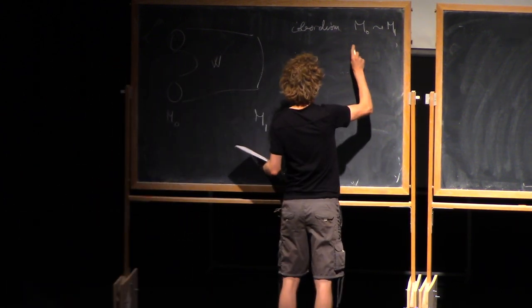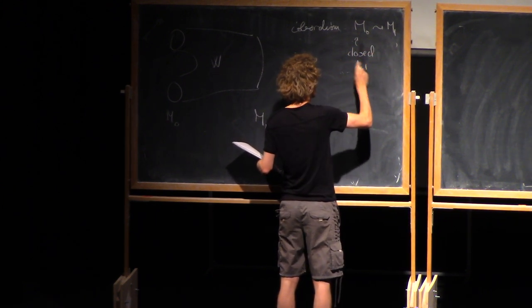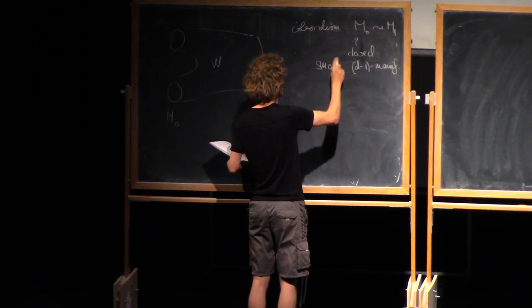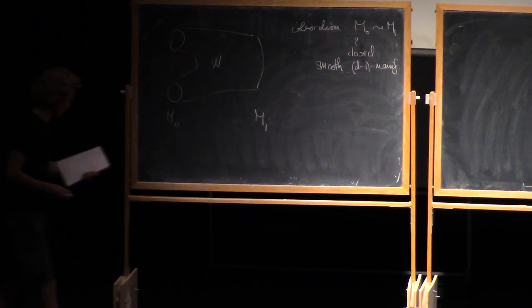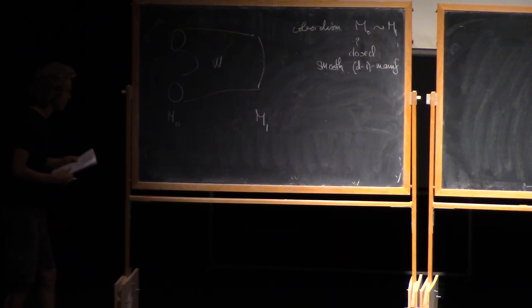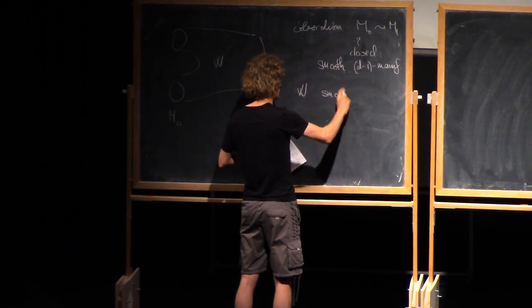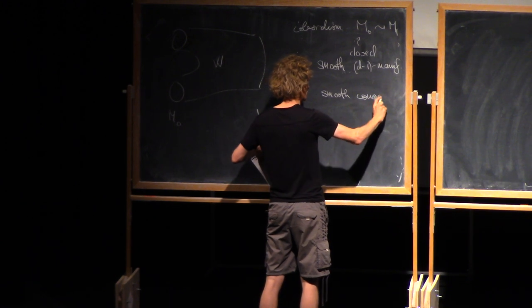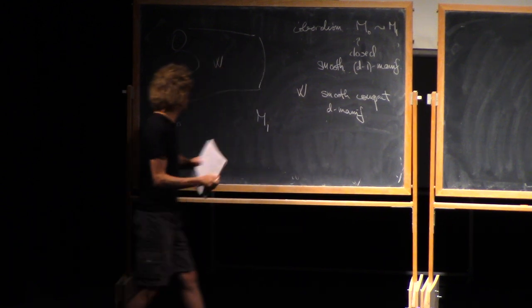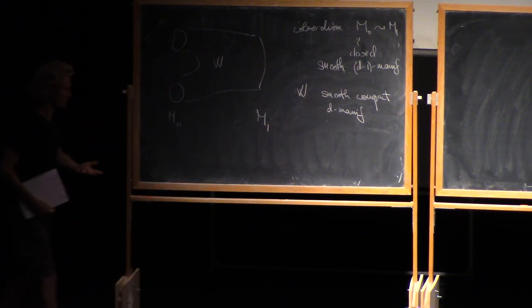These should be closed d minus one manifolds, smooth. Closed in these lectures means compact and no boundary, not necessarily connected. The cobordism is a smooth compact d manifold. And then the boundary should be identified with M0 disjoint union M1, and the identification is part of the data.